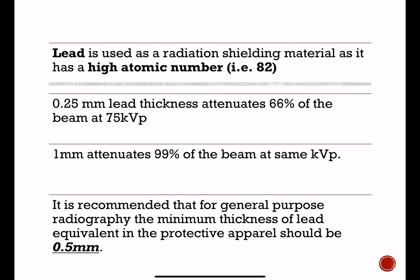Lead is used as a radiation shielding material because it has a high atomic number. The atomic number of an element is the number of protons in the nucleus, which is equal to the number of electrons around the nucleus. Because of its high density, lead is a good choice since any substance that can get in the way of radiation can soak or absorb it. For shielding materials, at up to 75 kVp, we should use at least 0.25 millimeter lead thickness, as 1 millimeter provides 99% attenuation of the x-ray beam at the same kVp.